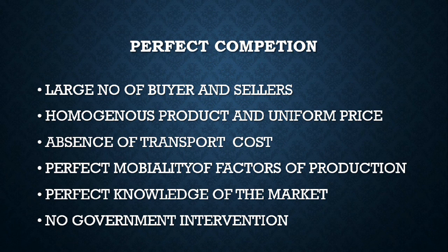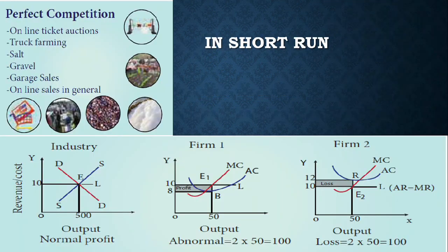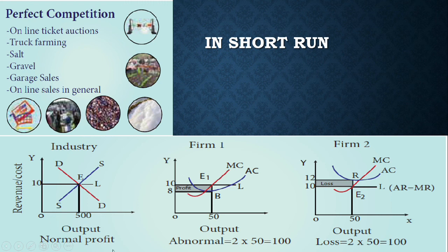Firm equilibrium in the short run: for example, take a newspaper company. First, we have an advertisement. If the industry is free to enter, we can achieve a normal profit in the newspaper business.